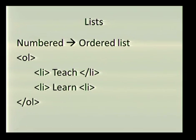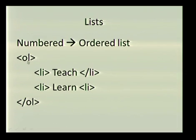Then we also have our numbered or ordered lists. Instead of just having a bullet you can have numbers or letters that put everything in the correct order. Instead of UL we now have OL for ordered list, and we also need to close that tag. The middle section looks exactly the same as your unordered list — you just insert your list items like 'teach' and 'learn', and you can add as many as you want.